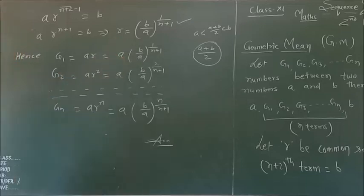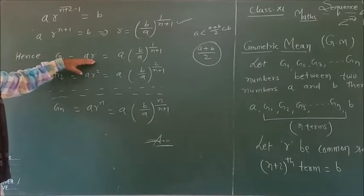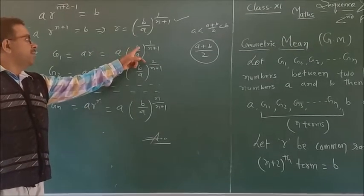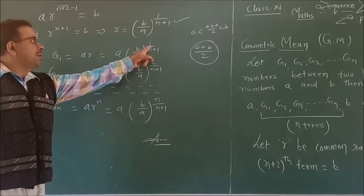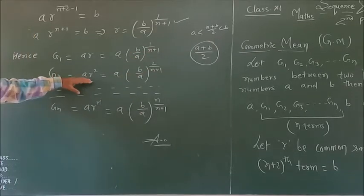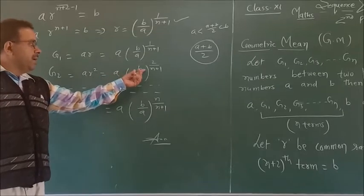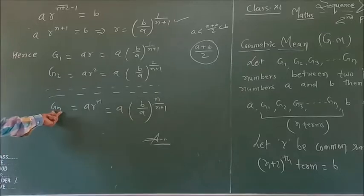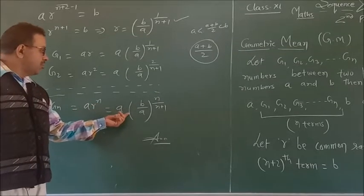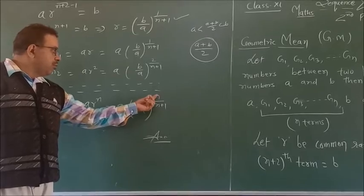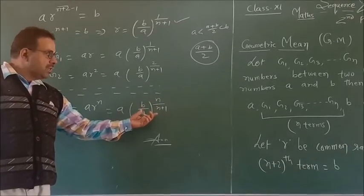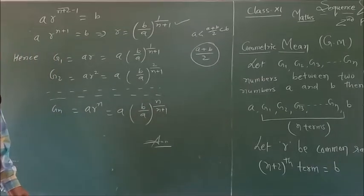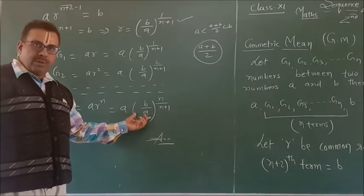With the help of this formula, G₁ = ar = a(b/a)^(1/(n+1)), G₂ = ar² = a(b/a)^(2/(n+1)), and similarly G_n = ar^n = a(b/a)^(n/(n+1)). The relation between geometric mean and arithmetic mean will be learned in the next video. Thanks.